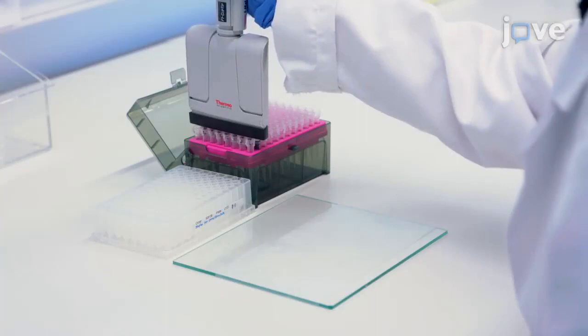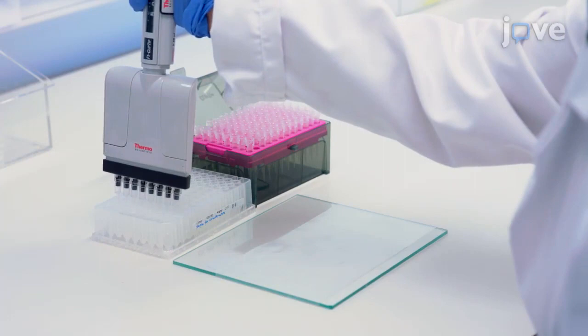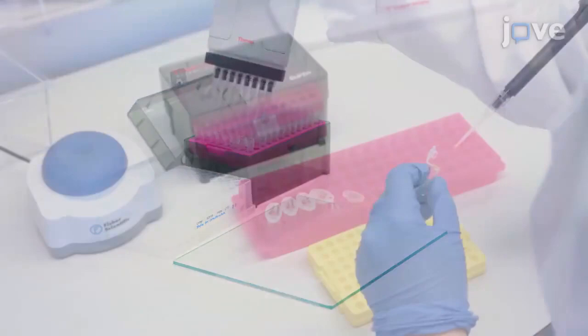Prepare a working stock of staple strands, including strands with handles and locks, by mixing equal amounts of concentration-normalized staple oligonucleotides. Then prepare the origami mixture as detailed in the text protocol. Anneal the mixture in a thermocycler from 80 degrees to 20 degrees Celsius.